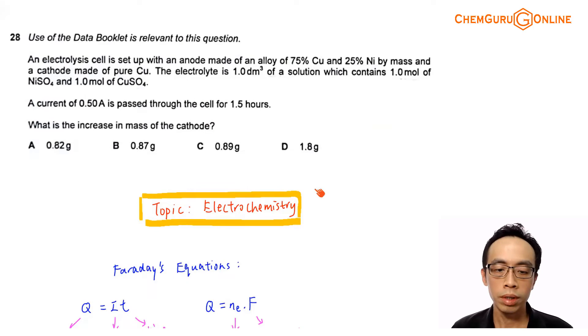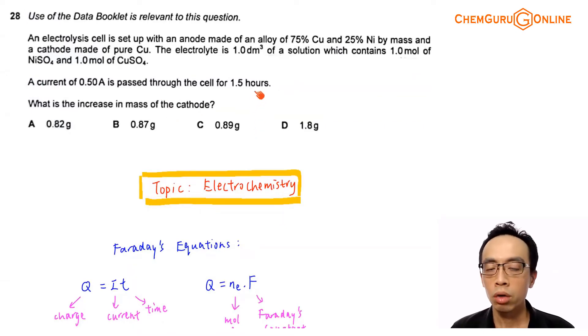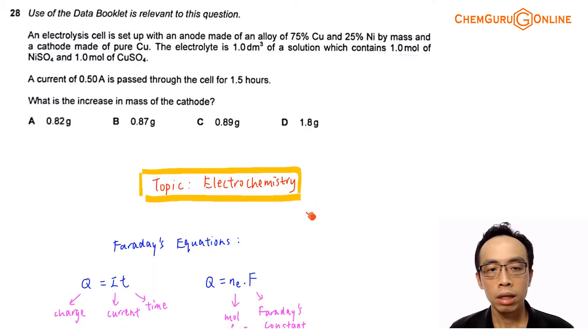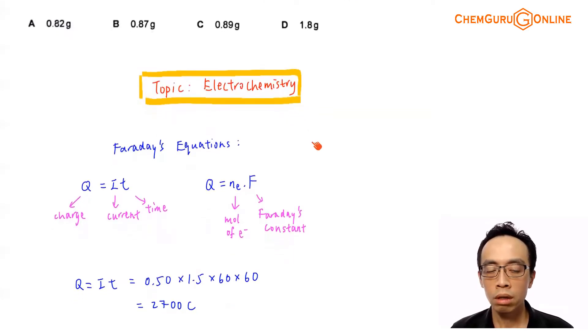Of course, the topic tested in this question is electrochemistry involving electrolysis. In order to determine the increase in the mass of the cathode, we need to know which species will be discharged at the cathode. We will be making use of Faraday's equations. The first one is Q = IT, charge equals current times time. The second one is Q = nF, number of moles of electrons multiplied by Faraday's constant, and the value is inside the data booklet.